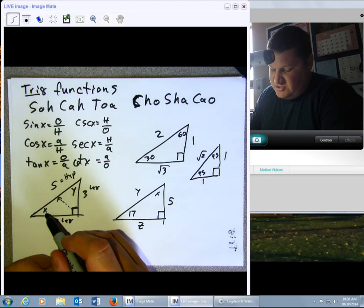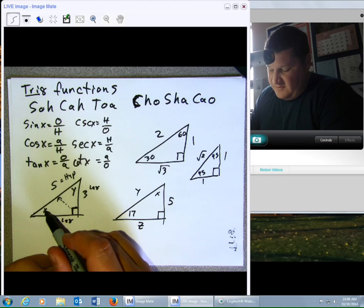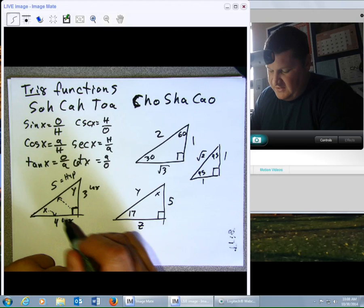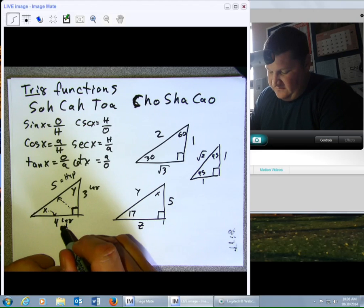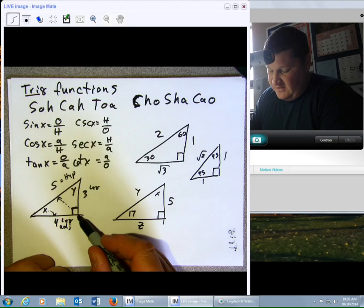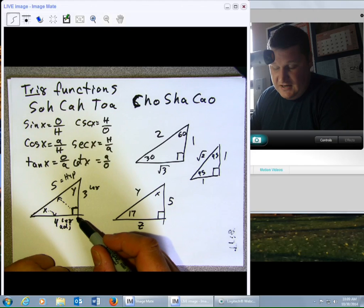But if I'm talking about angle X, then I can say that this leg over here would be considered adjacent. Now, adjacent meaning right next to. So if I'm sitting adjacent to someone else, I'm sitting right next to someone. In this case, the side is adjacent. It's right next to this angle X.